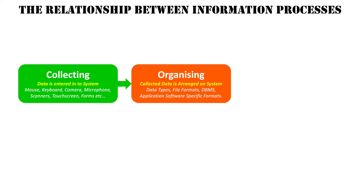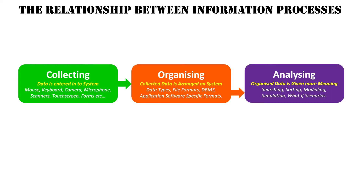Once the data has been organized, we can then manipulate it — that's what analyzing is all about. Organized data is given more meaning: we can search it, sort it, model it, simulate it, do what-if scenarios. That's how we turn data into information through analysis. Once analysis is complete, it's usually reorganized — for example, sorting might put everything in alphabetical order. So there's a cycle happening between organizing and analyzing.